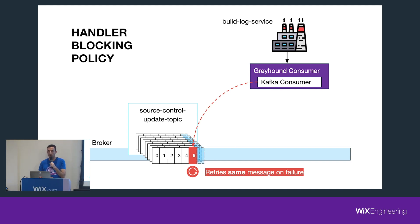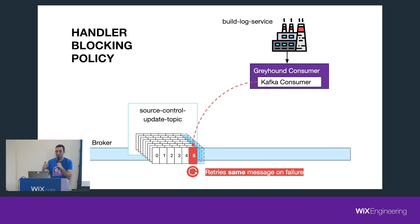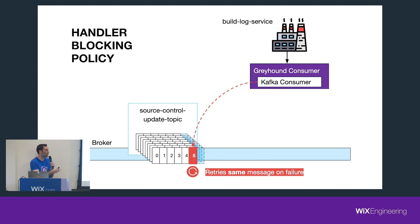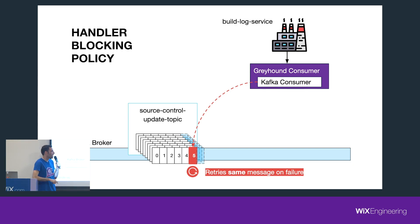Consider the build log service, which stores all kinds of metadata about our build state for other services to consume. It consumes updates from GitHub via the source control update topic, and it must not process messages out of order — doing so would cause corruption in the state.